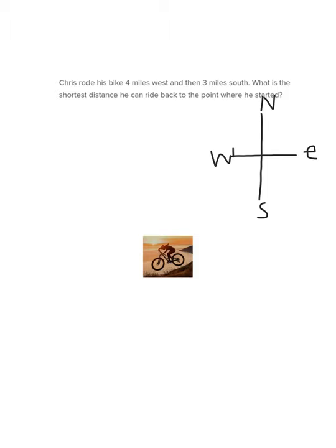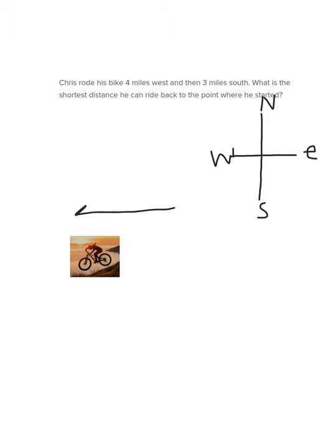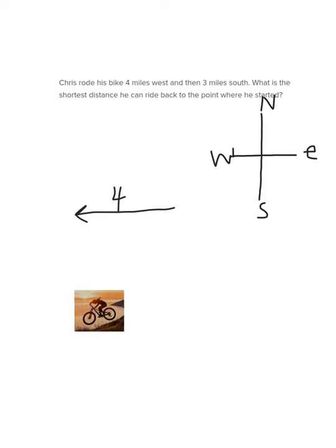So here's Chris. Chris is going to ride his bike. He's going to ride his bike four miles west and I'm going to draw a line to represent four miles west. And then he's going to ride his bike three miles south. So he just rode his bike three miles south. And here's a line that represents Chris riding his bike three miles south. And the question is, what is the shortest distance he can ride back to the point where he started? So Chris wants to go back to where he started and the shortest distance he can go is this diagonal right here.